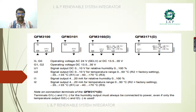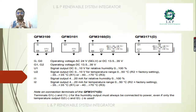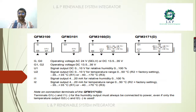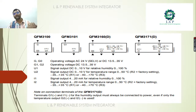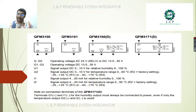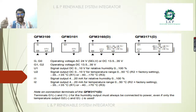In Siemens, the model QFM 3100 has only three terminals — G, G0, and U1 — and provides temperature output as a voltage. The model QFM 3101 provides temperature output as a current (4 to 20 milliamps). For model QFM 3160D, you can get both temperature and humidity output, with terminals G, G0, U1, and U2, providing a 0 to 10V DC output.